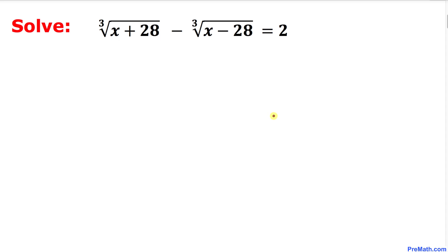Welcome to pre-math. In this video tutorial we are going to solve a radical equation that involves cube roots. We are going to solve: the cube root of (x + 28) minus the cube root of (x - 28) equals 2.